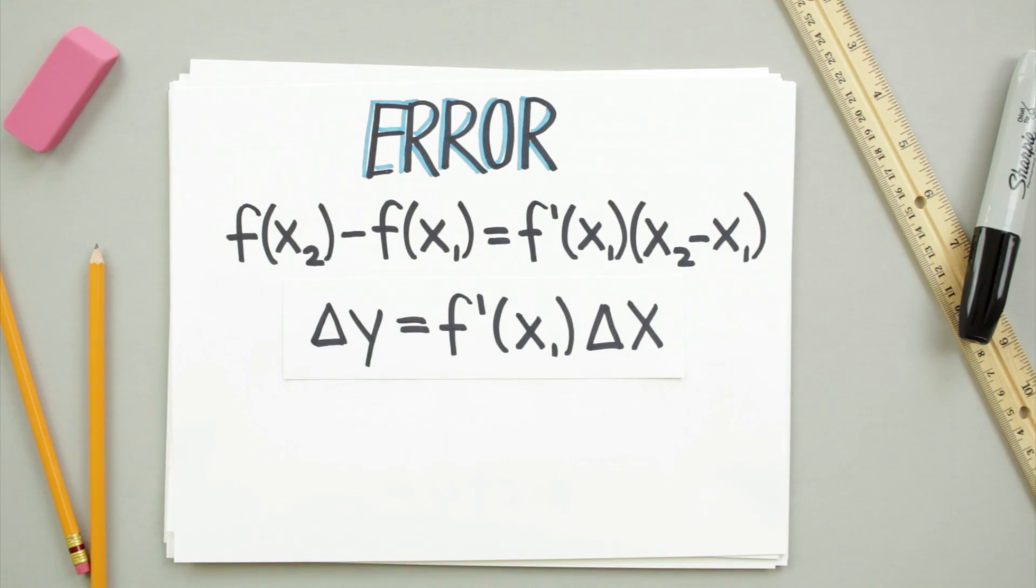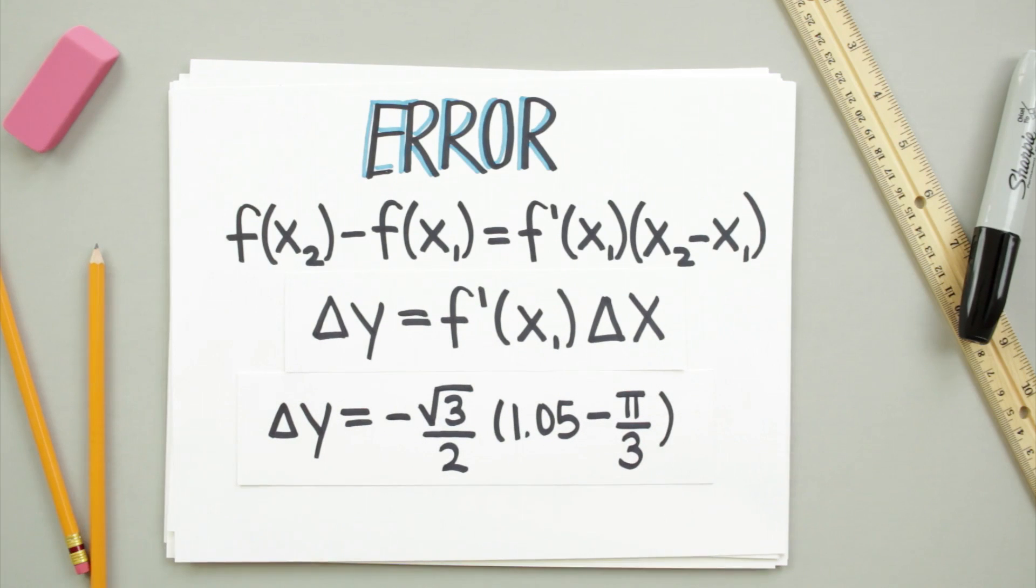In this case, the error is equal to negative root 3 over 2 multiplied by 1.05 minus pi over 3, which gives us a value of about negative 0.0024. This is a pretty small margin of error, so I'd say we got a pretty good estimation of x equals 1.05 thanks to linear approximation.